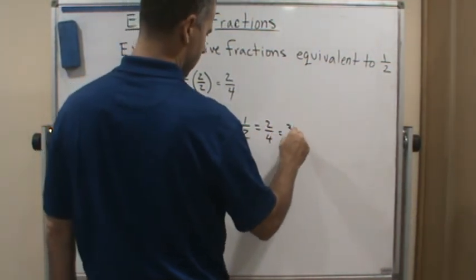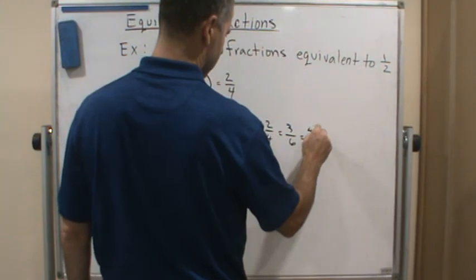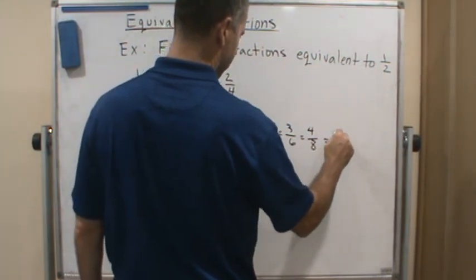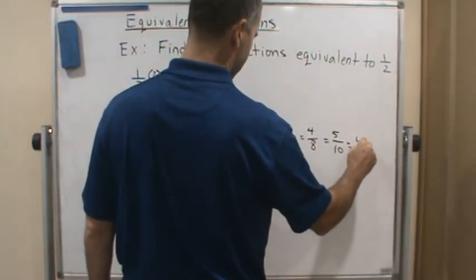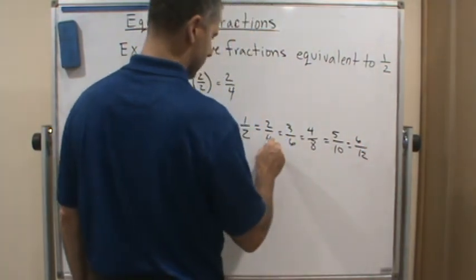And so 5 equivalent fractions to 1 half is going to be what? 2 fourths, 3 sixths, 4 eighths, 5 tenths, and 6 twelfths.